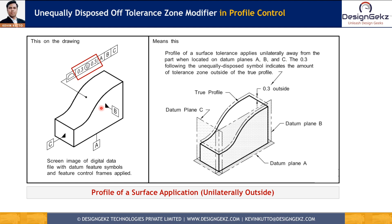Even though basic dimensions are not shown here, we establish this true profile with the help of basic dimensions with respect to datum A, B, and C. If we add the U modifying symbol besides the profile control tolerance value, it means our design demands either unilateral or unequal distribution of the tolerance zone with respect to the true profile — basically overriding the default distribution.